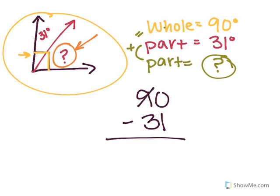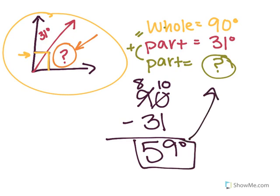So I would take 90 degrees and I would subtract 31 degrees from it. Well I can't do 0 minus 1, so I ungroup. That becomes a 10 because I borrowed a 10 from the 10's place. 10 minus 1 is 9. 8 minus 3 is 5. So I know the missing degree is 59 degrees.